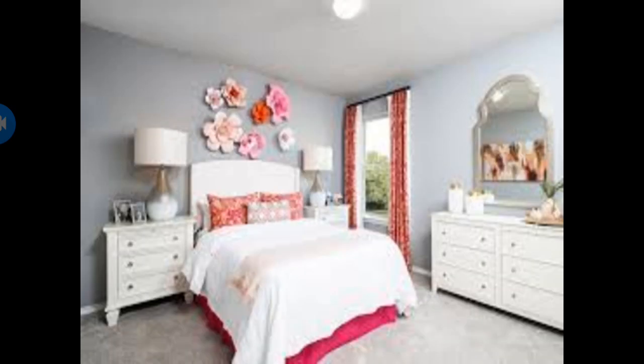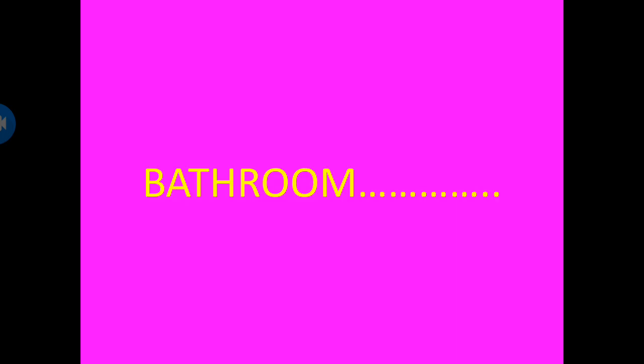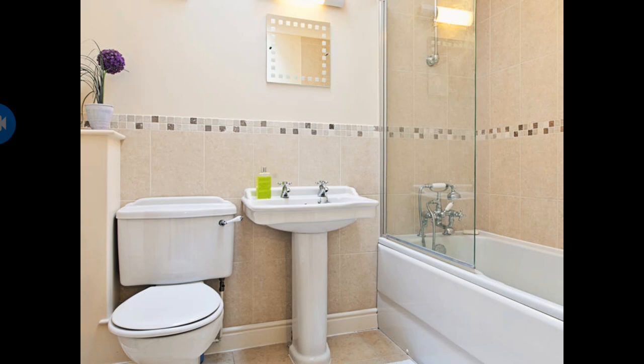Second is a bedroom. The bedroom is the place where we take rest. In the bedroom, we can see beds, pillows, bed sheets, and a fan. Next is a bathroom. The bathroom is the place where we get fresh. In the bathroom, we can see a wash basin, soap, towel, and shower.